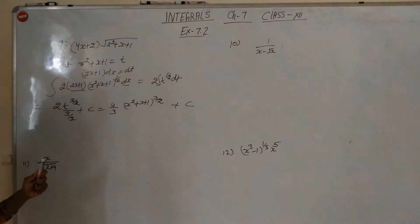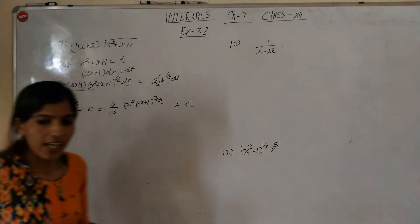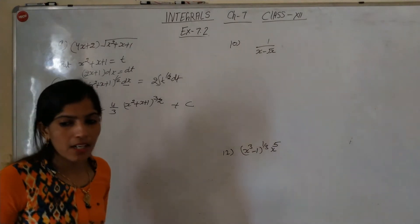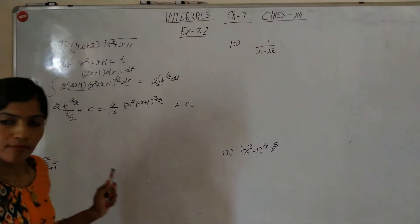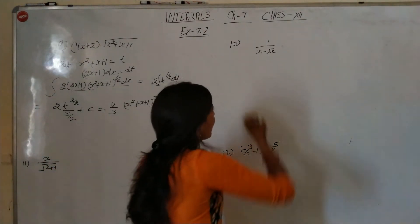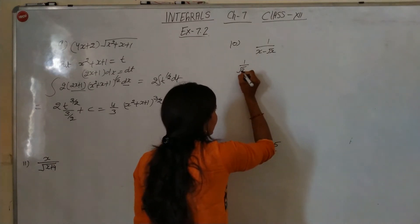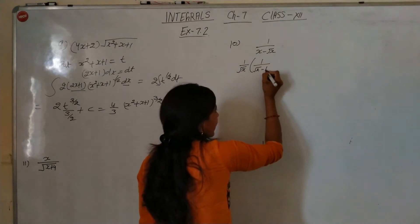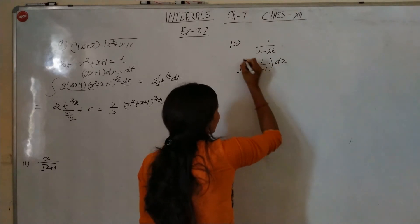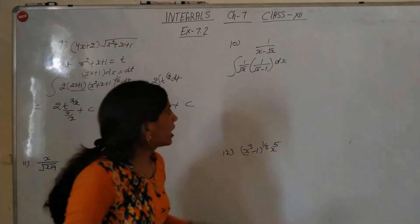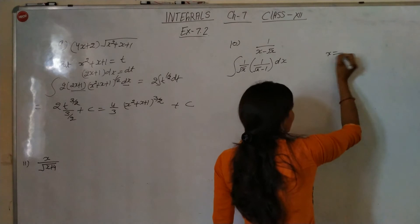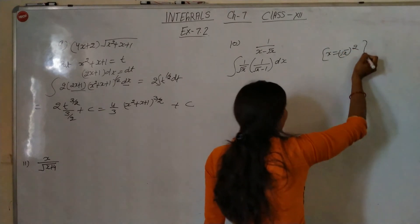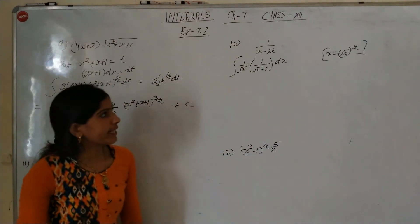The constants simplify: 2 by 3, 3 by 2 gives 4 by 3, then plus C. We applied substitution — putting the expression as input, taking its derivative, substituting, and integrating using the formula x^n integrates to x^(n+1) by (n+1).